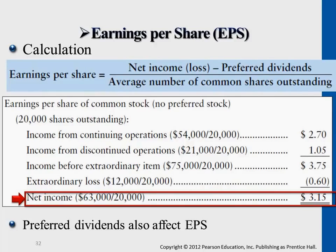So if I own a share that has an EPS of, say, $3 or $4, compared to other companies whose earnings per share is only $1 or $2, my shares are more attractive than their shares. This is essentially the amount of earnings that can be assigned to the number of shares — so for each share that shareholders own, what is their earnings value? That's what this measure is.